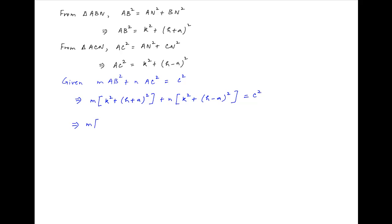This implies that (m + n) times (k² + h² + a²) plus 2ah times (m - n) is equal to c².